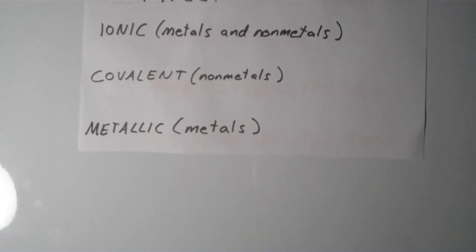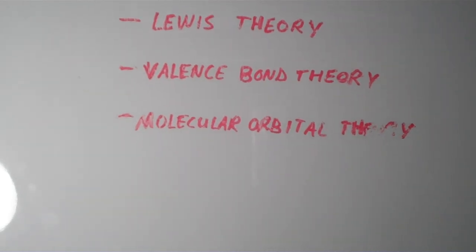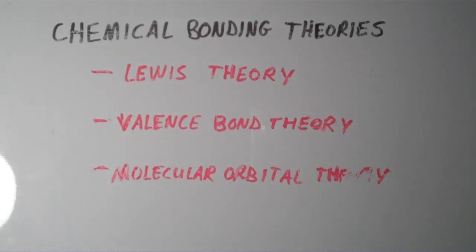So now that we've talked about the types of bonding and the origin of bonding, let's return back to the three chemical bonding theories, Lewis theory, valence bond theory, and molecular orbital theory. So, each one of these bonding theories is useful in its own right. It pretty much just depends on what properties you're trying to predict or describe.